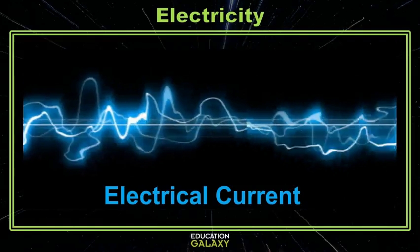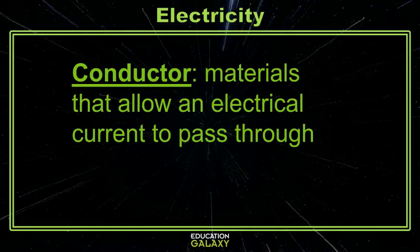Objects can either allow the current to travel through it, or prevent the current from moving through. If a material allows the current to travel, it is called a conductor.